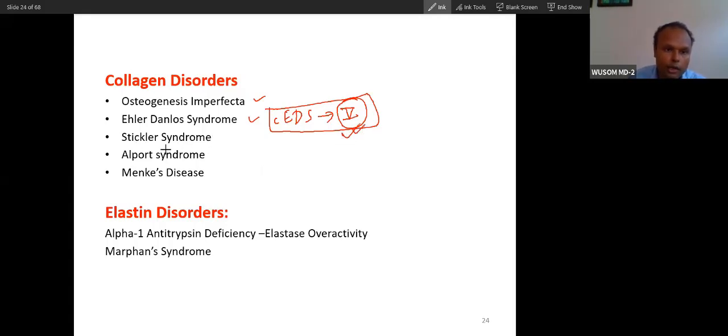Stickler syndrome - stickler means stickular, you can remember - is type 2 collagen. Alport syndrome is because of type 4 collagen. And then Menkes disease is because of copper deficiency. All these diseases we will talk about, you already know. About alpha-1 antitrypsin also you know. And Marfan syndrome.